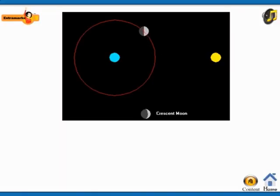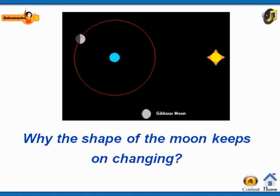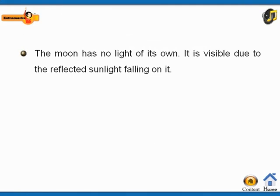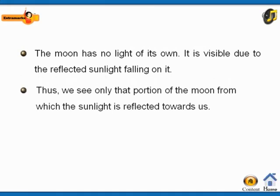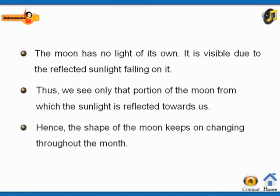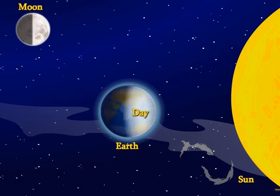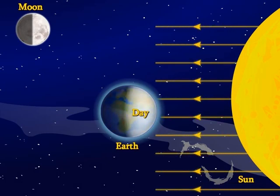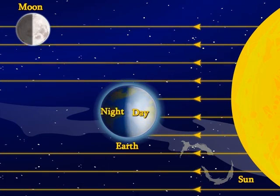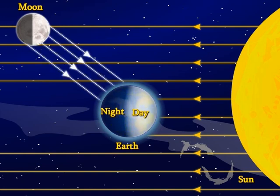A question must be coming to your mind: why does the shape of the moon keep on changing? The moon has no light of its own. Thus we see only that portion of the moon from which the sunlight is reflected towards us. The part of the earth facing the sun will have day, while the part not facing the sun will have night. The moon is visible to us because the sunlight falling on it gets reflected towards us.